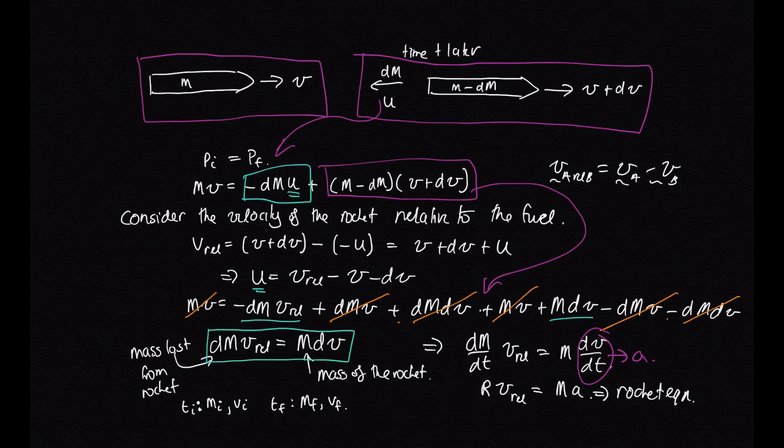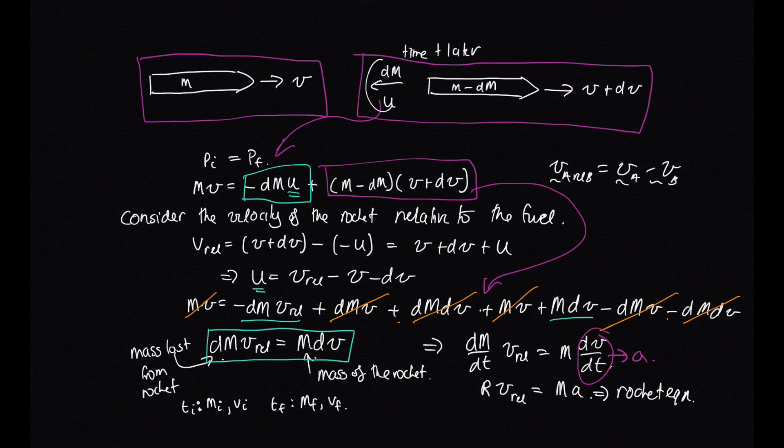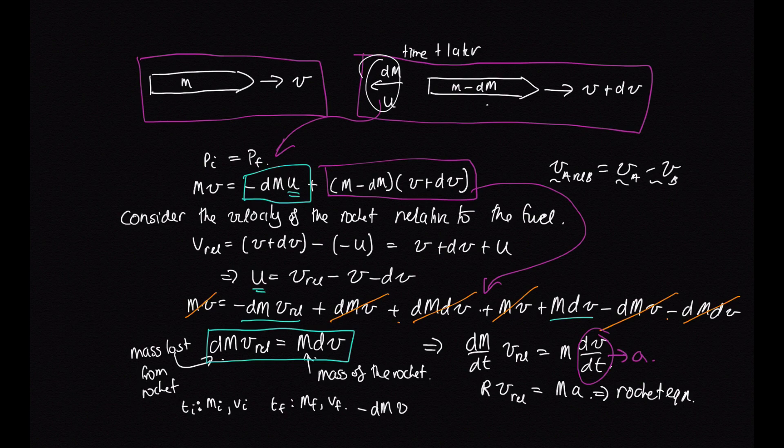It's just we need to make both terms on this equation, both the terms on either side, be talking about the same thing so that we can integrate. At the moment, this is the mass lost from the rocket. And on the right hand side, we've got the mass of the rocket. So if we want to do the change in mass of the rocket, instead of considering this, we're going to consider this part, then that mass is actually lost. So we should write this as dm v_rel is equal to m dv.